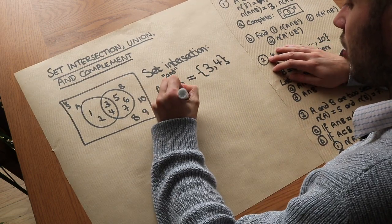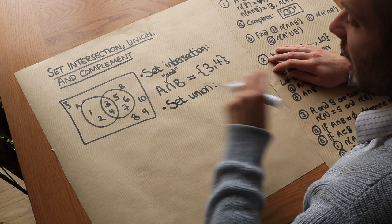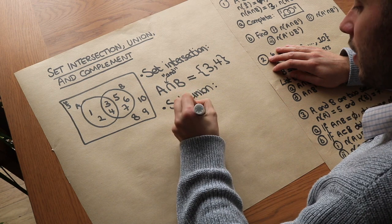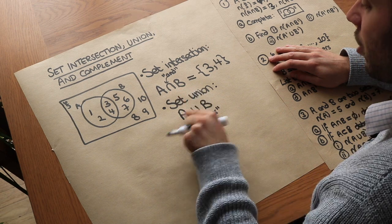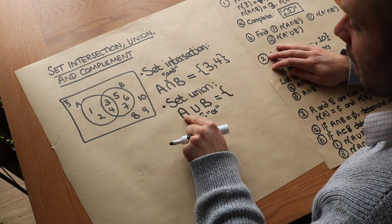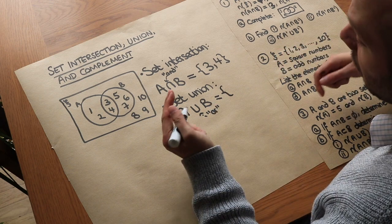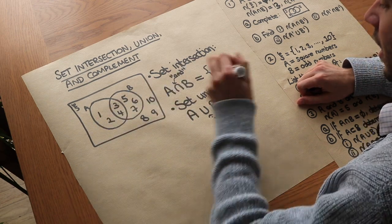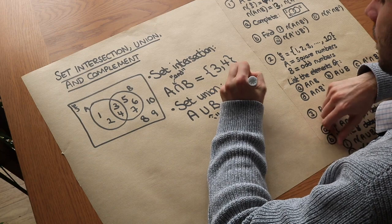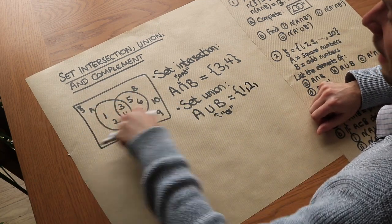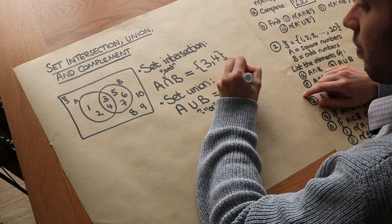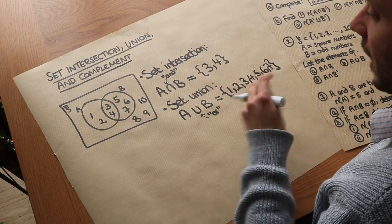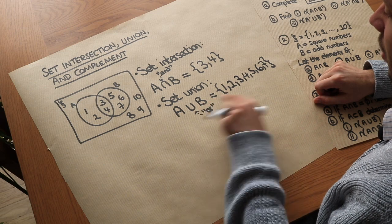There's another thing called set union, which gives you the set of things which are in A or in B. We write it as A ∪ B, which we can read as OR, but it could be both as well. So looking at these two sets, one is in A or B, two is in A or B, three is in both but still counts, four, five, six, seven are all included. The only things not in A or B are eight, nine and ten.